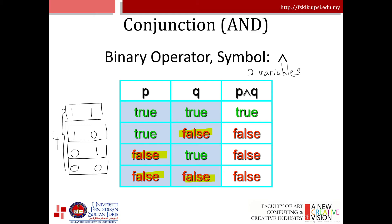Here is the truth table for conjunction. P, Q, P and Q. As you can see: P true (1), Q true (1), then P and Q is equivalent to 1 (true). P true (1), Q false (0), then P and Q is equivalent to false. You need to multiply: 0 and 1 is false, 0 and 0 is false. This is the truth table for binary operators.